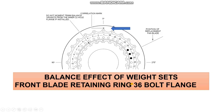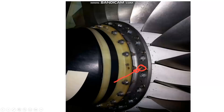The 36 bolts belong to the front blade retaining ring — that is what the 36 refers to. The asterisk shows where blade number one is located. From blade number one, you count anti-clockwise: two, three, four, and so on.